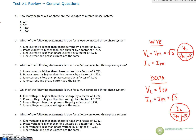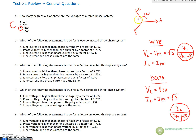Let's take on this first one. How many degrees out of phase are the voltages of a three-phase system? There are 120 degrees out of phase. So the answer for one is C. If we draw these out as vectors, we've got the A phase, the B phase happening 120 degrees later, then the C phase happening another 120 degrees, and again 120 degrees between C and A.